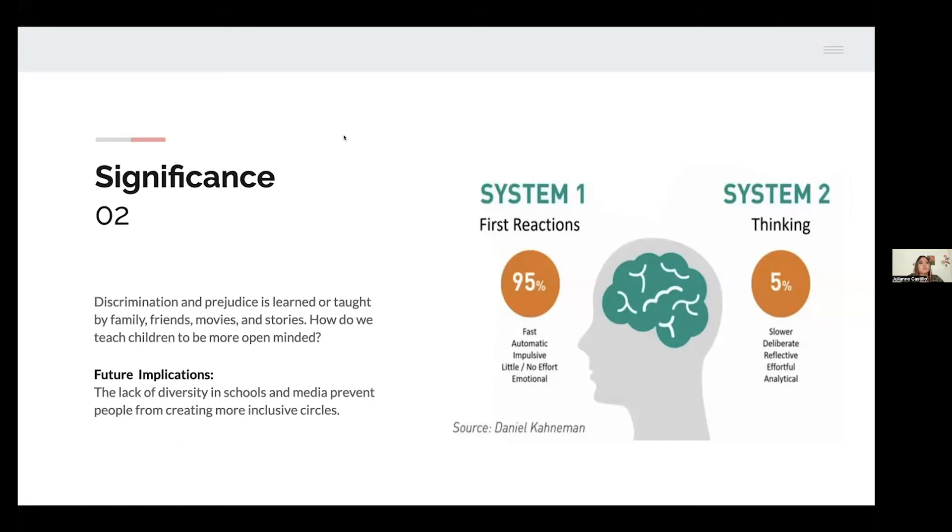Significance number two: discrimination and prejudice is learned or taught and it's typically through authority figures, family, friends, and currently now through movies and stories because that's typically how children and people interact through media. So how do we teach children to be more open-minded? I believe that the lack of diversity in schools and media prevent people from creating more inclusive circles. That goes back to the affinity bias, how we stick to people and circles that we are comfortable in.